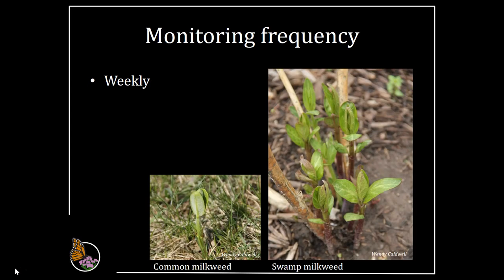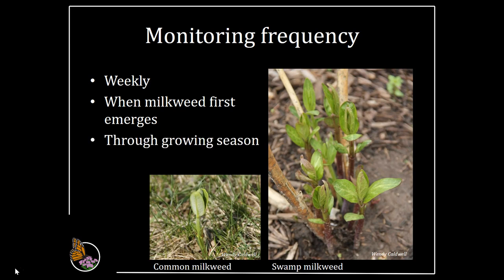We recommend conducting this activity weekly if you can, but monitoring less frequently is acceptable. Weekly data help us better understand how monarch survival and reproduction progress through the year. Since monarchs follow emerging milkweed north in the spring, they can readily find small milkweed plants as soon as they emerge. So begin monitoring your milkweed as soon as it emerges and continue throughout the growing season.